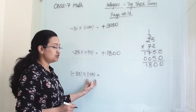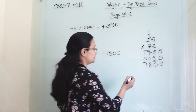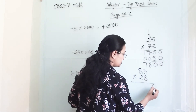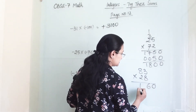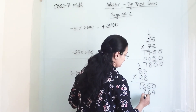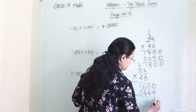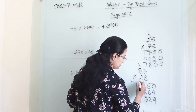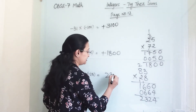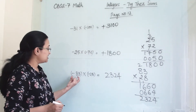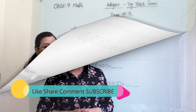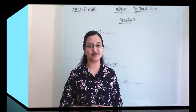Next, (-83) × (-28). First we do simple multiplication: 83 × 28, which gives 2324. Then minus × minus becomes plus, so our answer will be +2324. I will see you in the next video. Till then, keep practicing, keep learning.